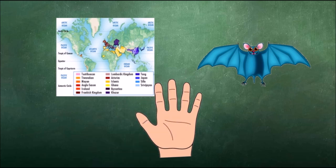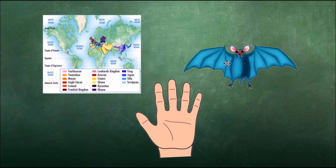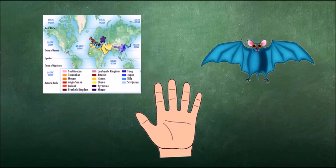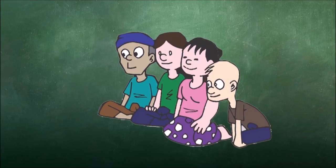Then I show the pictures again: map, bat. Then I ask, do these pictures have the same ending sound? The students should respond with no. Then I would ask, why not? Students should respond with because map says P at the end and bat says T at the end.